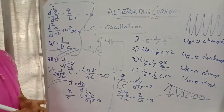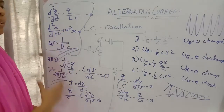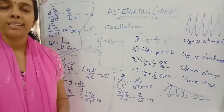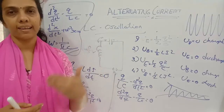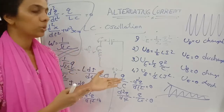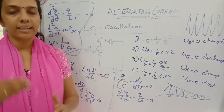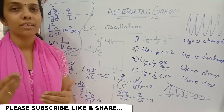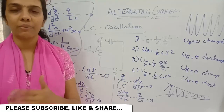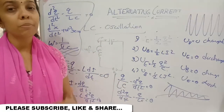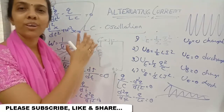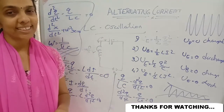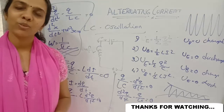This is the frequency of LC oscillation — nu equals 1 by (2 pi root LC). I think this video is clear. In the next class we will be doing some numericals related to the LCR circuit and LC oscillations. I hope all of you are trying the practice questions. We will meet again in the next video. If you like the channel, please don't forget to subscribe, like, and share. Thank you for watching, bye.